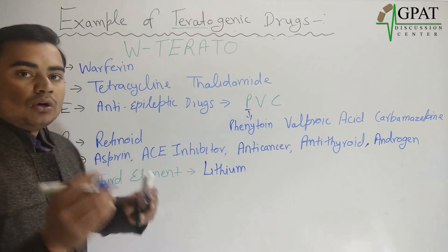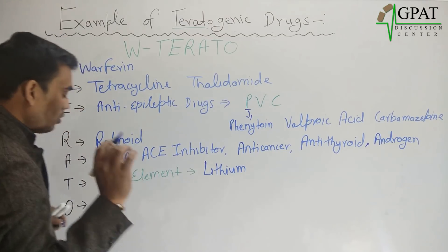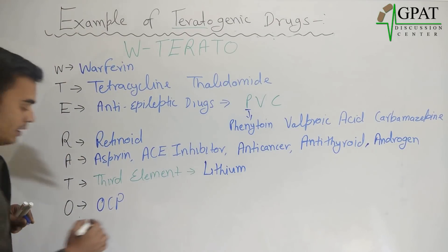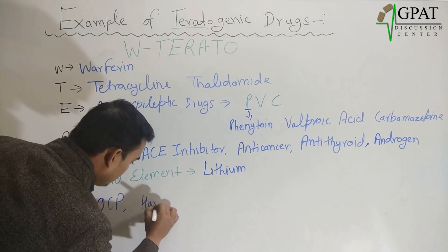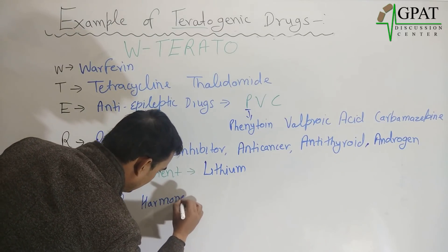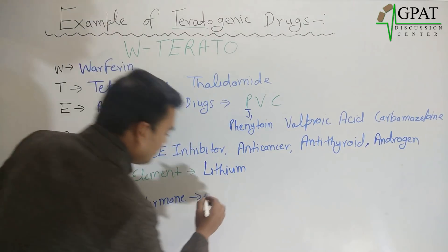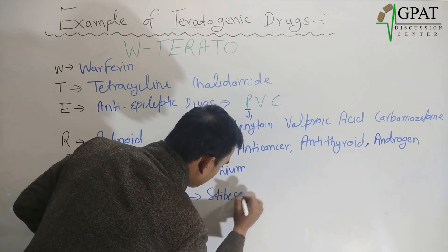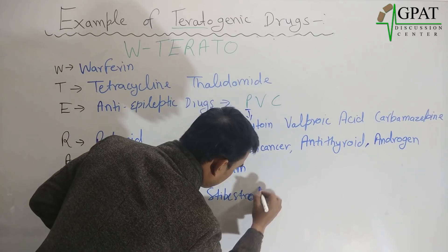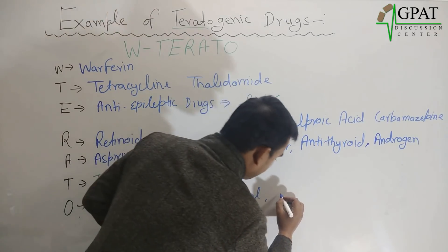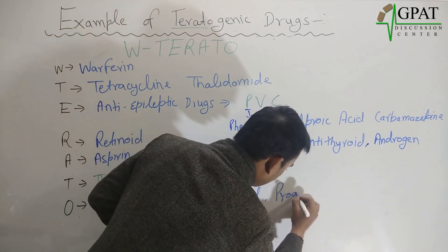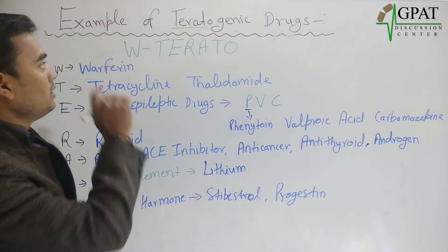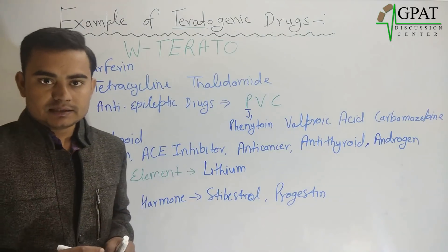Next, O — O comes from OCP, oral contraceptive pills, and other hormones. The examples of hormones are basically diethylstilbestrol and progestin. So these are the examples of teratogenic drugs. Thank you.